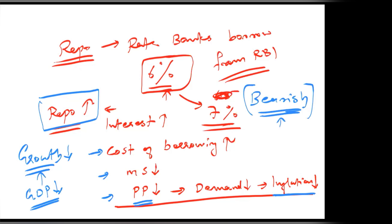If repo is decreased, it is an extreme bullish situation. This indicates that RBI's prime concern — price stability — has been achieved, and now RBI is looking for growth. So a repo decrease signals that the market is very good and stable. This is extreme bullishness, and you need to take a bullish trade immediately.